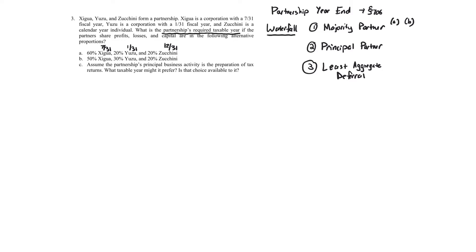Going down our waterfall in A, we start with the majority partner test: does any partner or partners owning more than 50% have the same year end? The answer in A is yes, because X owns 60%, which is more than 50%. So in A, the majority partner test applies. We stop there and apply that rule. The answer is July 31st is the required year end.